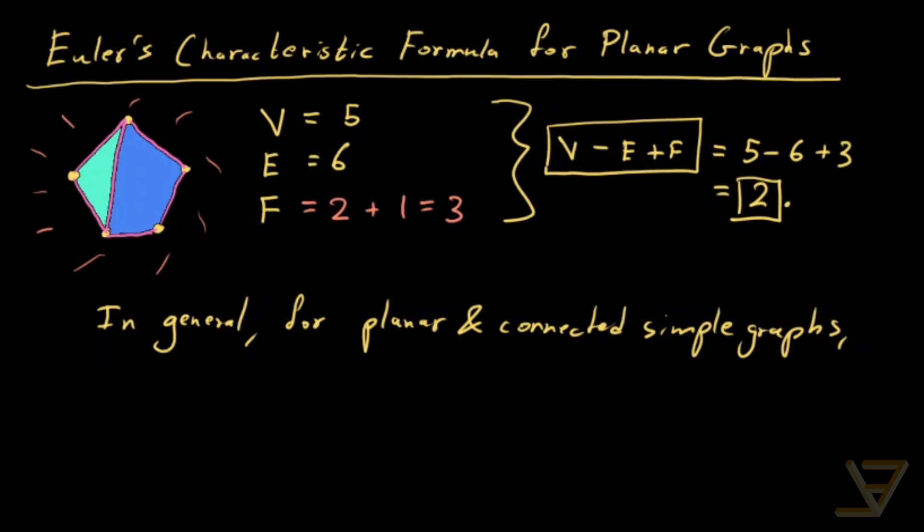For planar connected simple graphs, V, the number of vertices minus the number of edges plus the number of faces including the unbounded face is always equal to 2.